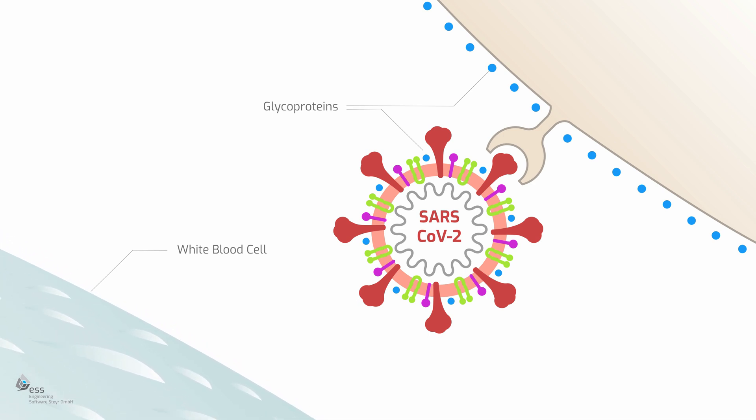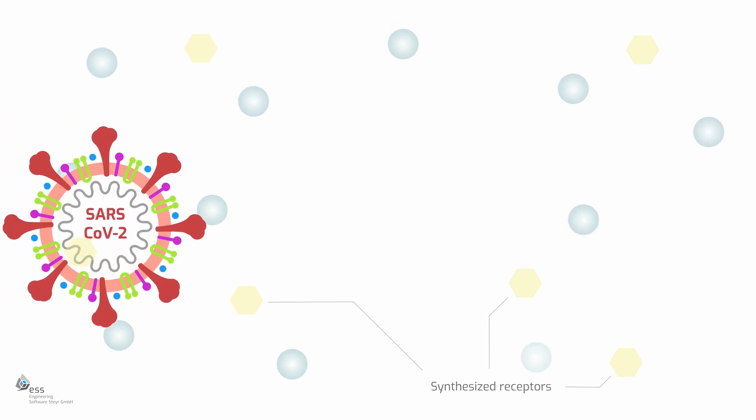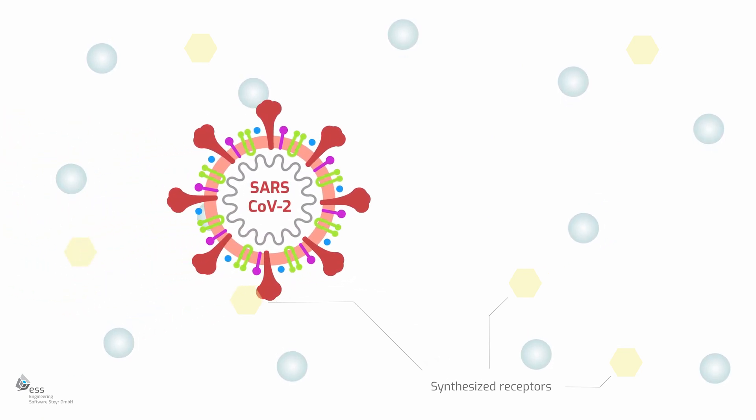The seemingly harmless invader is hidden just like a Trojan horse. The mechanism inside the BAM filter coats the passing virus as it enters the respiratory tract.